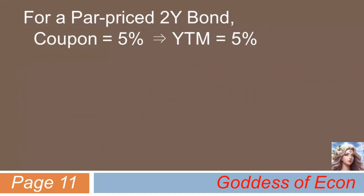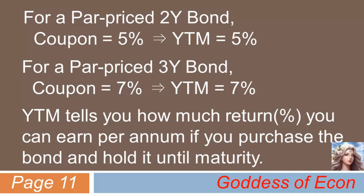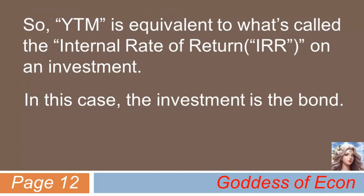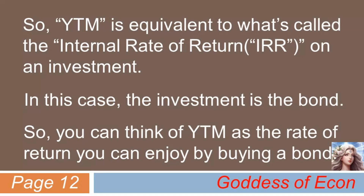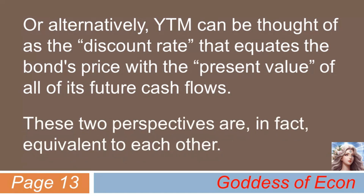So far, we have seen that for a par-priced 2-year bond, the coupon was 5% and so was its yield to maturity. Also, for a par-priced 3-year bond, the coupon of 7% translated to a yield to maturity of 7%. From these examples, you can get a hunch that YTM is a measure that tells you how much return you can earn per annum if you purchase the bond now and hold it until maturity. The concept of YTM is equivalent to what is called the Internal Rate of Return, or IRR, on an investment — in this case, the bond. So you can simply think of YTM as the rate of return you can enjoy by purchasing a bond and holding it until maturity. Alternatively, YTM can be thought of as the discount rate that equates the bond's price with the present value of all of its future cash flows. These two perspectives are, in fact, equivalent to each other.